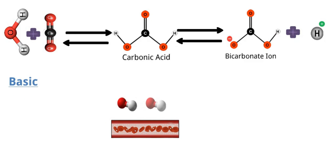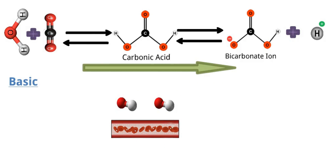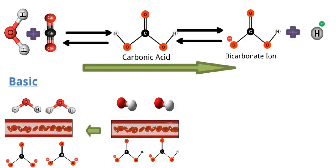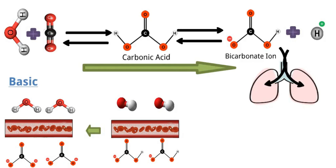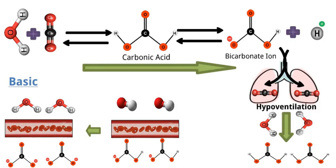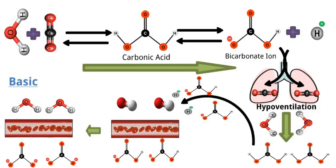In basic conditions, where there is an excess of hydroxide ions in the bloodstream making it alkaline, the bicarbonate buffer system shifts to the right. The excess hydroxide ions react with bicarbonate ions to form water and carbonate ions. The lungs tend to accumulate carbon dioxide by decreasing the rate and depth of breathing, also known as hypoventilation. The accumulated carbon dioxide reacts with water, leading to the formation of carbonic acid, contributing to the rightward shift in the equilibrium. In response to excess alkalinity, the kidneys also play a role in bicarbonate ion excretion to help maintain balance.